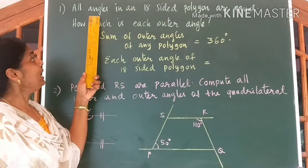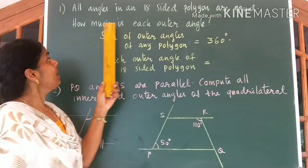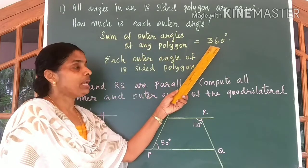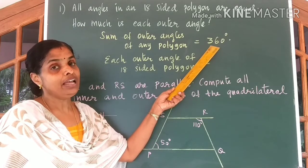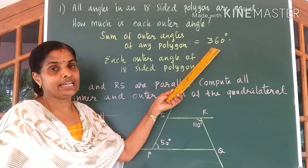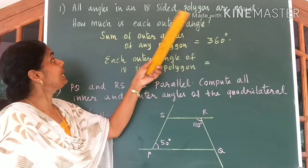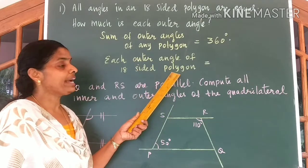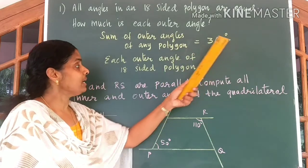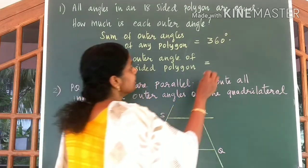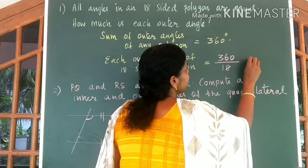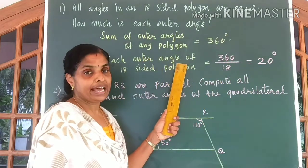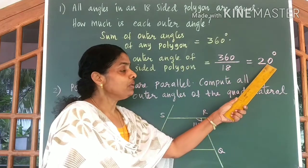Look at the first question. All angles in an 18-sided polygon are equal. How much is each outer angle? We know the sum of outer angles of any polygon equals 360 degrees — we checked it for a triangle and quadrilateral, and it is the same for all polygons. So each outer angle is 360 divided by 18, which equals 20 degrees.